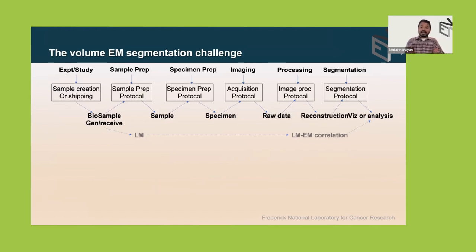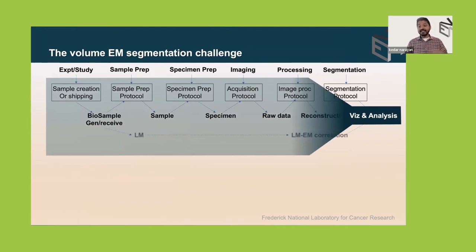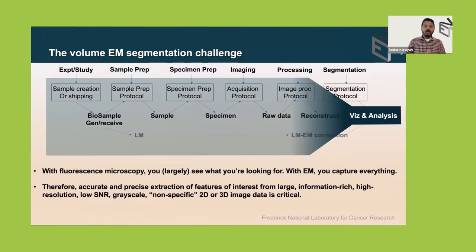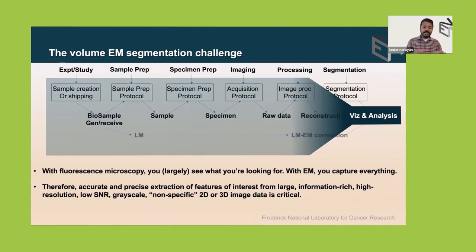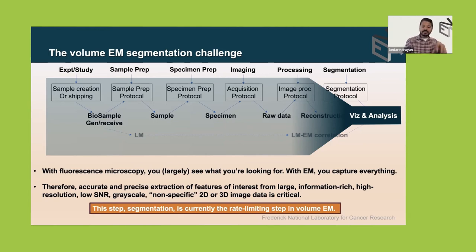Now I'll talk about the volume EM segmentation challenge. In the experimental pipeline the bottleneck is clearly in visualization and analysis. With fluorescence microscopy you largely see what you're looking for — you label mitochondria, you see mitochondria. But with electron microscopy you capture the ultrastructure of everything, which means accurately and precisely extracting just your features of interest from these large, information-rich, high-resolution grayscale images — what we call segmentation — is critically important. Currently segmentation is still the rate-limiting step in volume EM.